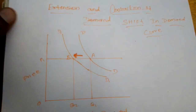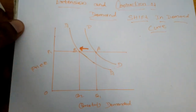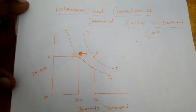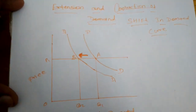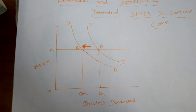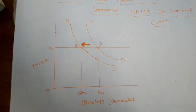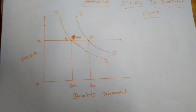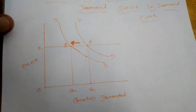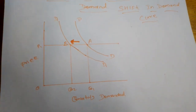The next concept is the shift in demand curve. Here, the entire demand curve shifts from its existing place — for example, from D to D1. A shift in the demand curve occurs when there is a change in variables other than price in the general demand function. So apart from price, there are other determinants of demand.